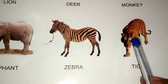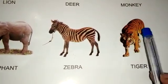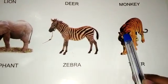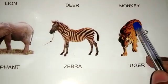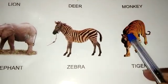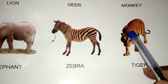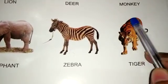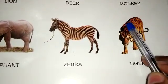And what is this? This is a tiger. This is, you know, an orange color with black lines.